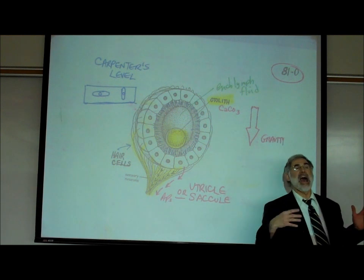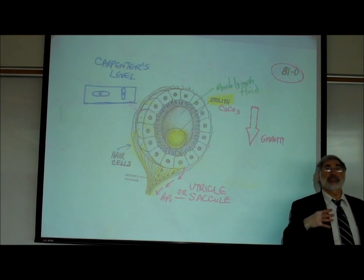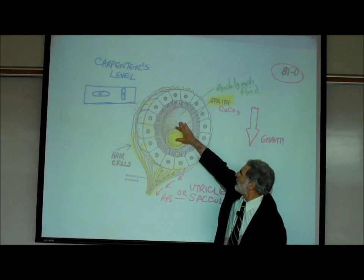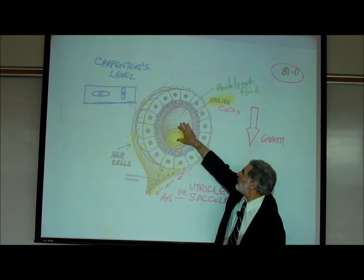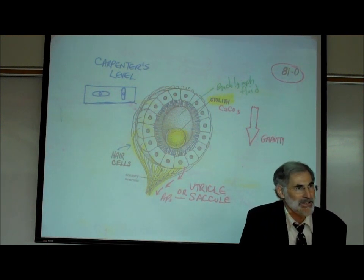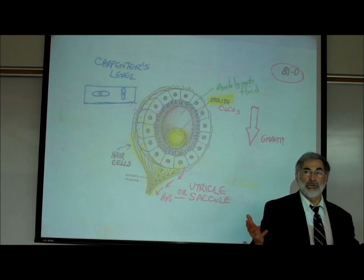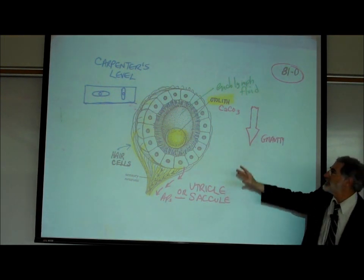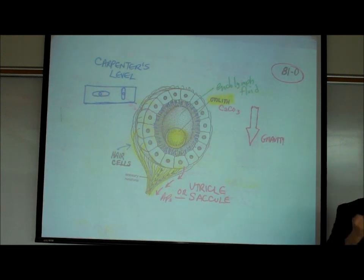What if you were in outer space? There is no gravity in outer space. The rock would be floating in the middle because there is no gravity to pull it in any direction. Since the rock is just floating, none of the hair cells are being activated. You won't feel any up or down, you won't feel any gravity — and there is no up or down in outer space.